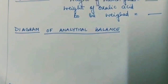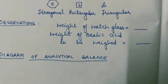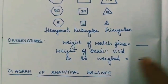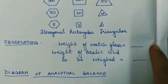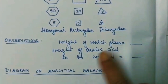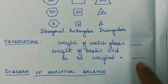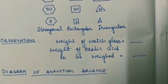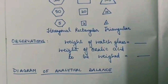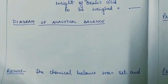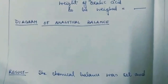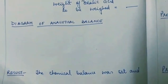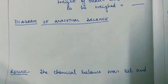After the diagrams come the observations: weight of watch glass in grams, and weight of oxalic acid to be weighed in grams. At the end of the experiment, you will again repeat the same result as written on the right-hand side.